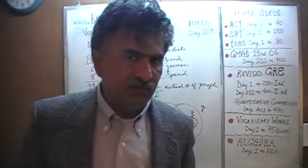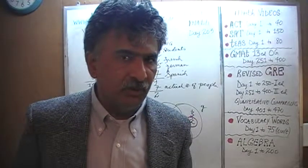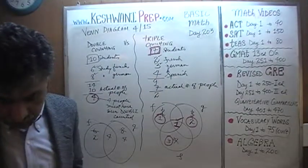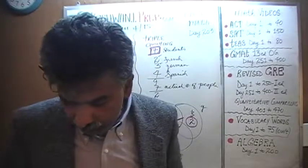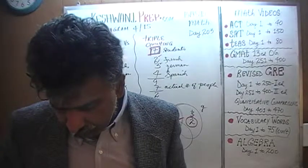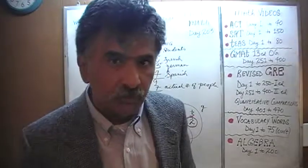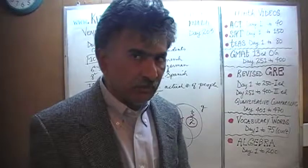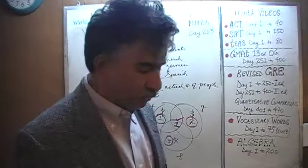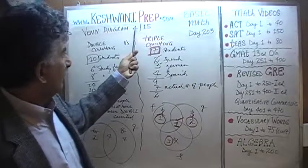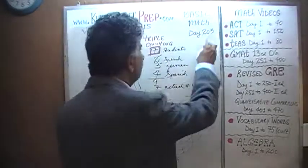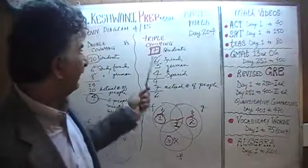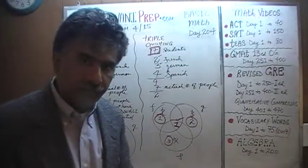Unless you grasp and master this concept, you will have a very tough time when dealing with a Venn diagram situation involving three characteristics and you risk making careless mistakes. I had originally intended to do another problem in this video, but I will not do that right now. We will continue triple counting tomorrow — day number 5, lesson 204. We will do a simple problem illustrating the concept of triple counting and a couple more. I'm going to stop here so the video doesn't become too long. Make sure you watch tomorrow's video. I will see you tomorrow. Bye now.